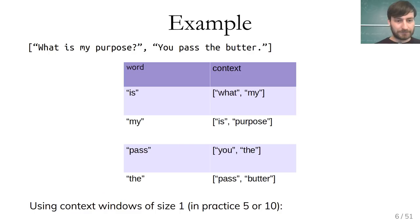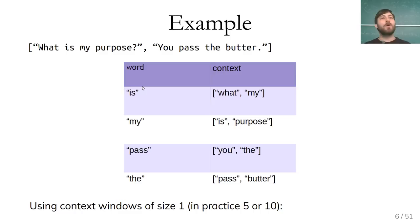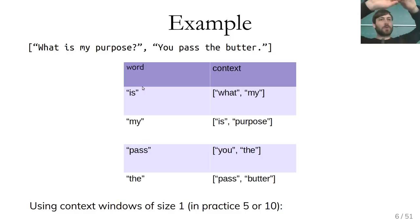Here's an example. Say you have two documents: 'What is my purpose?' and 'You pass the butter.' The input might be 'is' and the context would be 'what' and 'my.' You try to learn a model that predicts those context words given the input word. For small samples this doesn't make a lot of sense, but over a large collection, some things are more likely to appear in certain contexts than others. In practice, you usually use something like five or ten surrounding words in each direction.